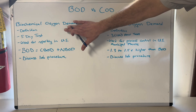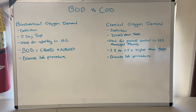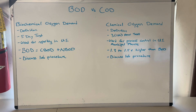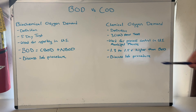We use a five-day test to determine BOD, and that can be kind of problematic because you don't really know if you've got a process problem for five days. That's not a comfortable place to be, especially if you're in a big plant sending out 150 million gallons a day — you can really mess some stuff up in five days. And that's where COD comes in.